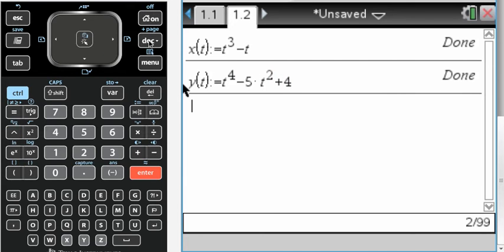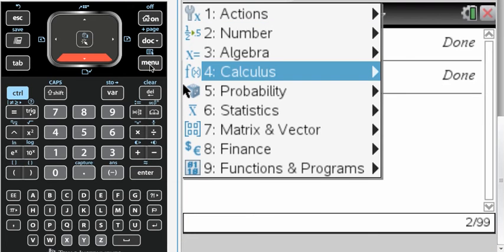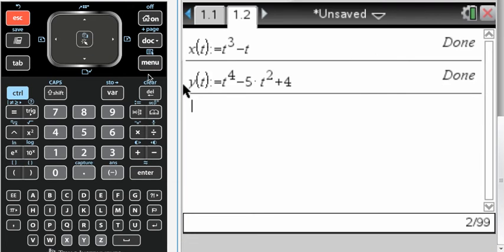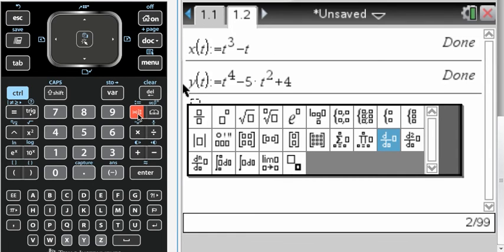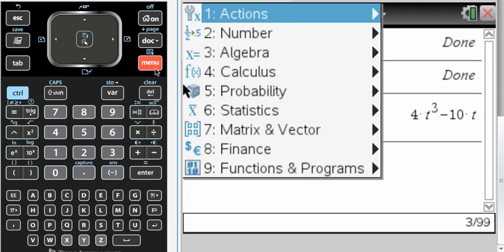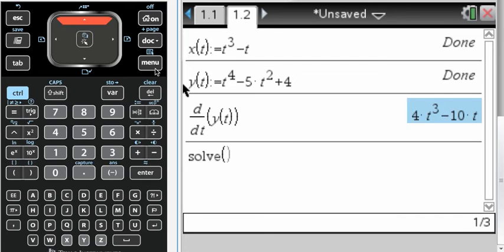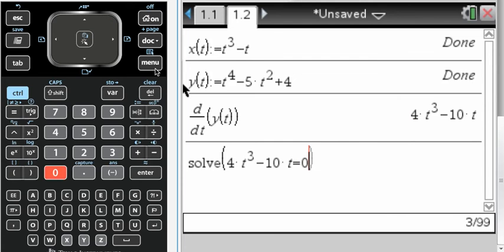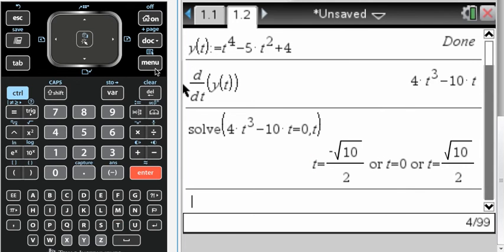Okay, so for there to be a horizontal tangent line, the derivative dy/dt would need to be zero. So let's take that derivative. And then what I want to do is actually solve. So menu 3, 1 is solve equal to zero for t, and I get those three values.